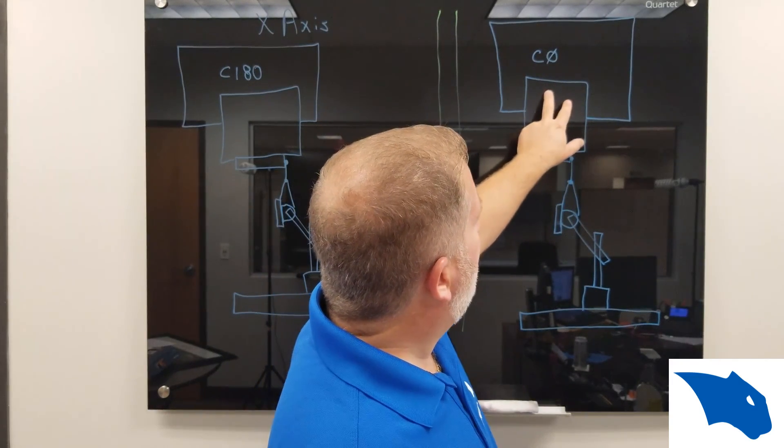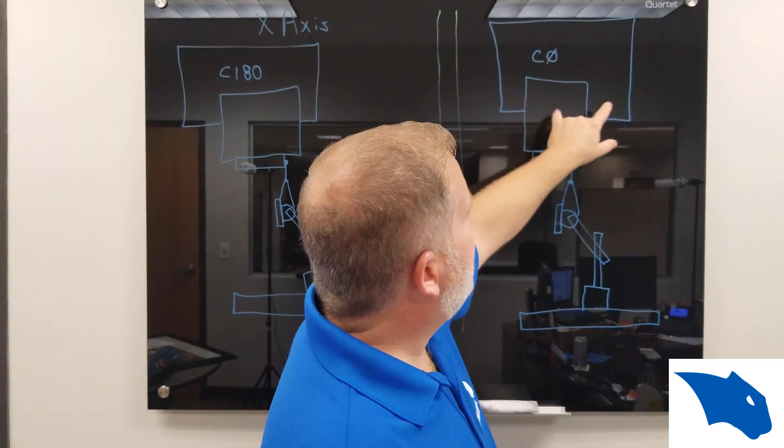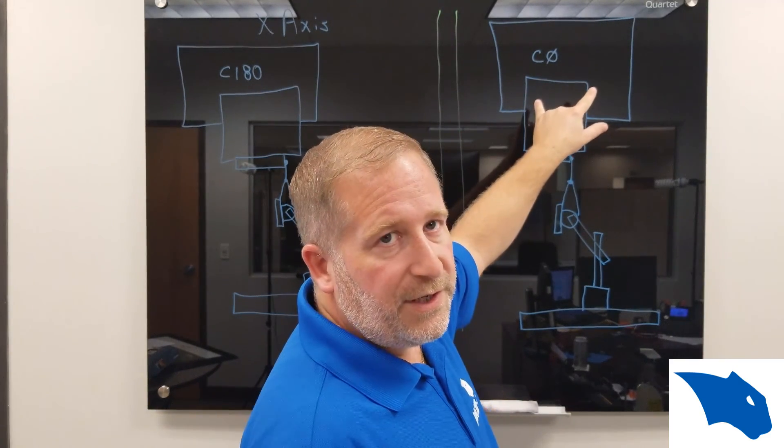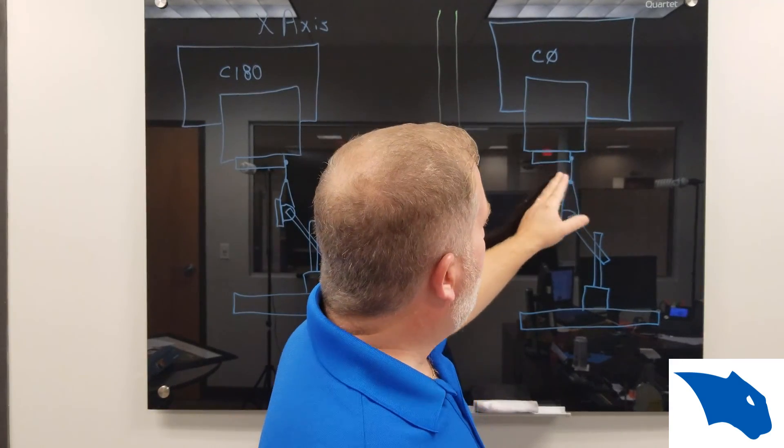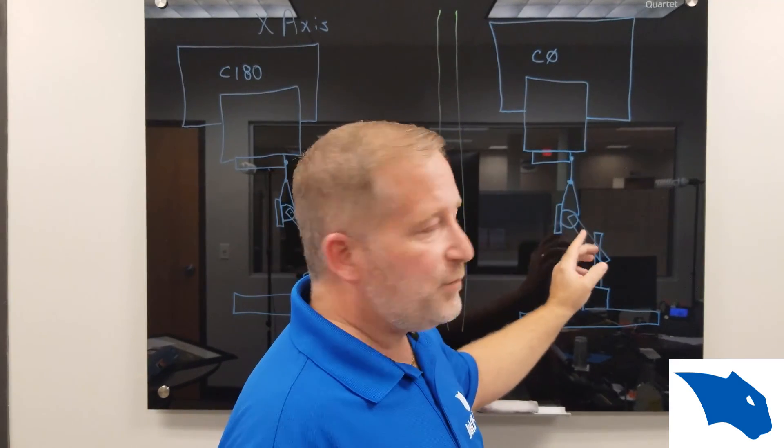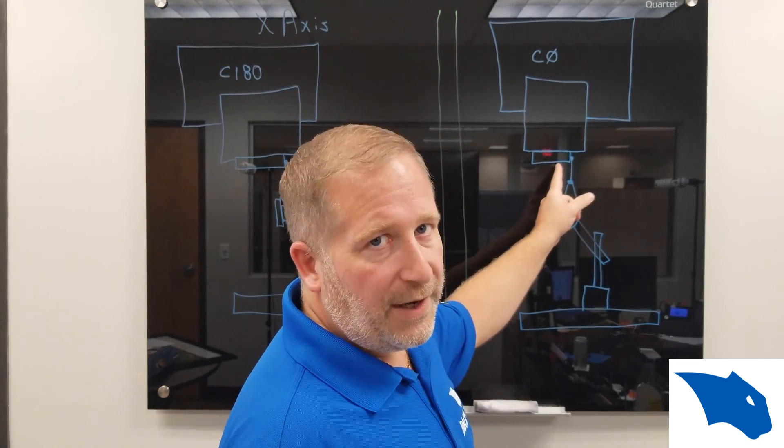Now I've drawn this to where the c-axis, one side is bigger than the other so that we can see the actual rotation that happens. So once you've found this x-axis position with the indicator up against the side of the spindle in x,